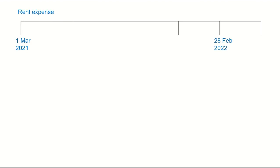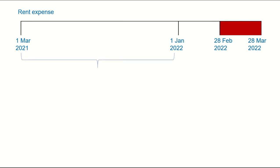I'll start by calculating rent that falls within the current financial year using a number line. The financial year runs from 1 March 2021 to 28 February 2022. Rent increased on 1 January 2022. Before January, rent was 10x per month for 10 months; after January, rent was 110% of 10x (i.e., 11x) for 3 months. The total paid was 110,390.